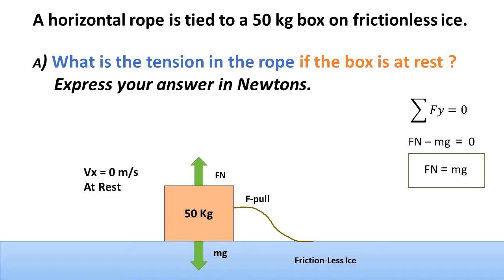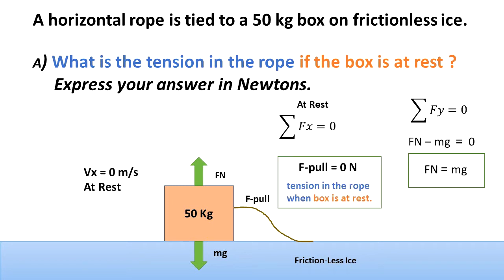Now let's do the summation of the forces in the x direction. Because the box is at rest, we know that the net force has to be zero. The only force we could have in the x direction is the f-pull due to the rope, and because it is at rest, the tension in the rope f-pull has to be zero Newtons.